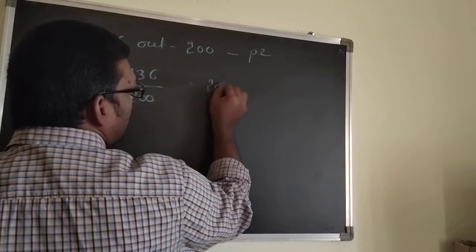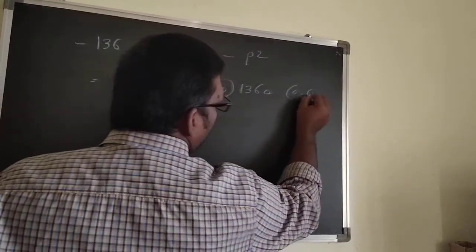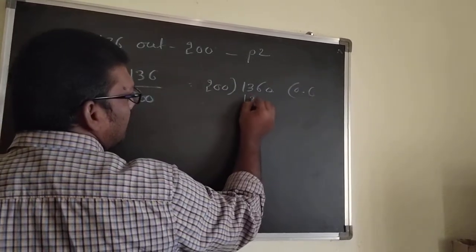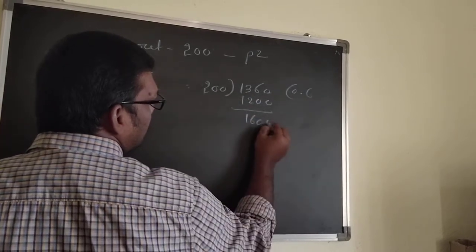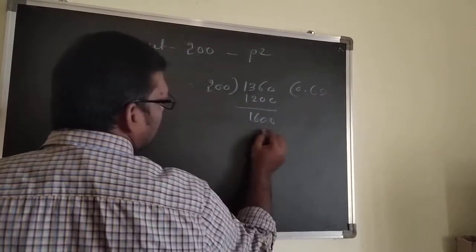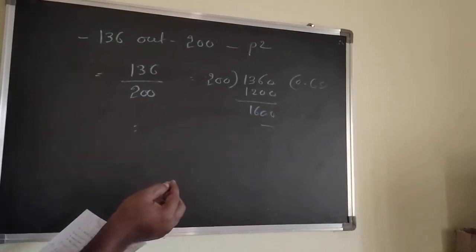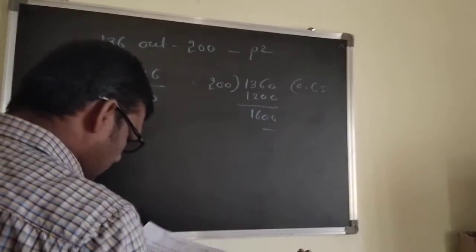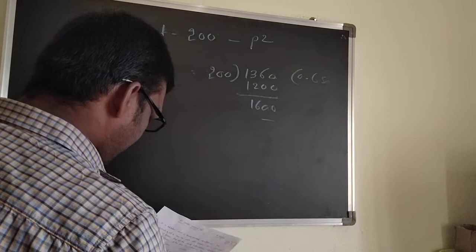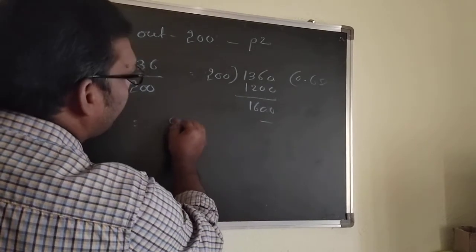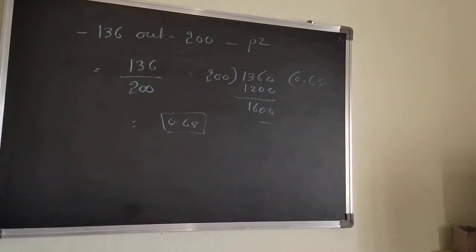Calculating 136 ÷ 200, you get 0.68. So 0.68 is the answer — the dominant allele frequency.